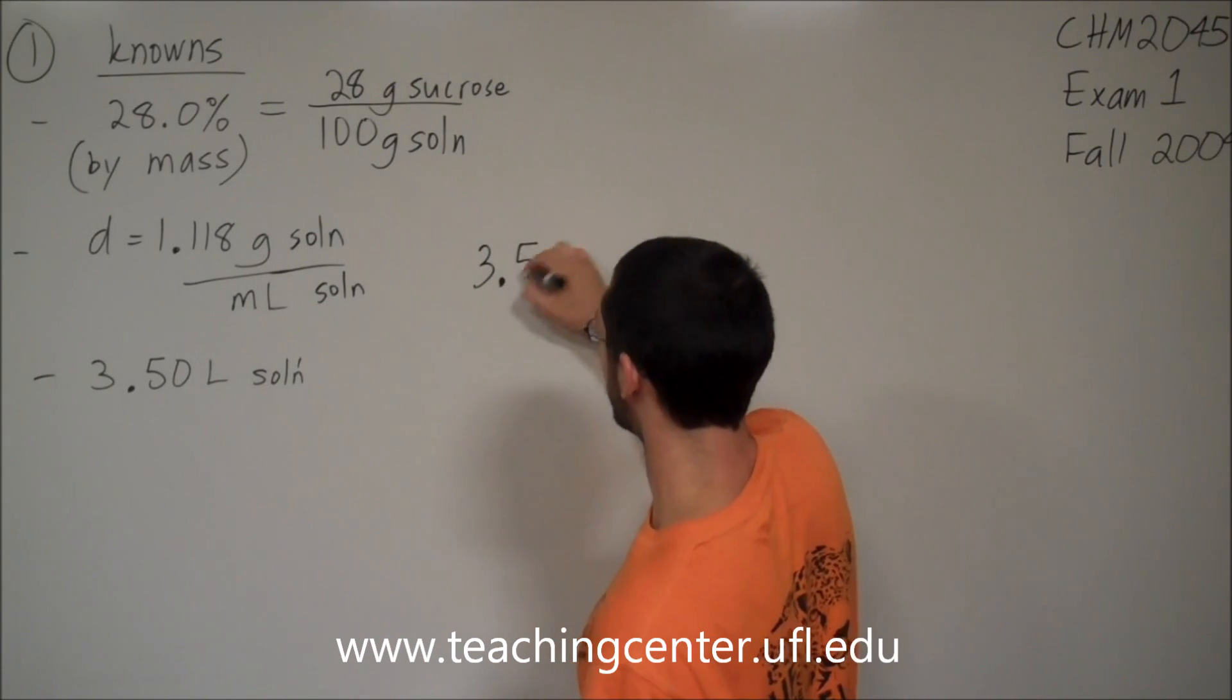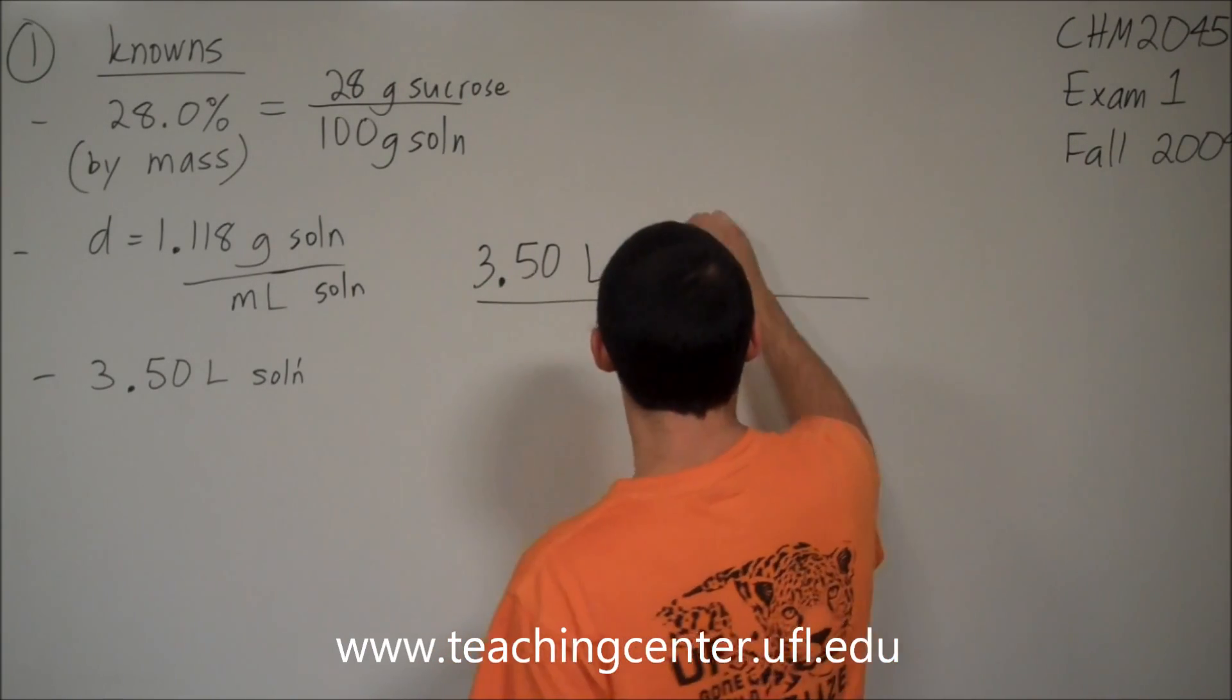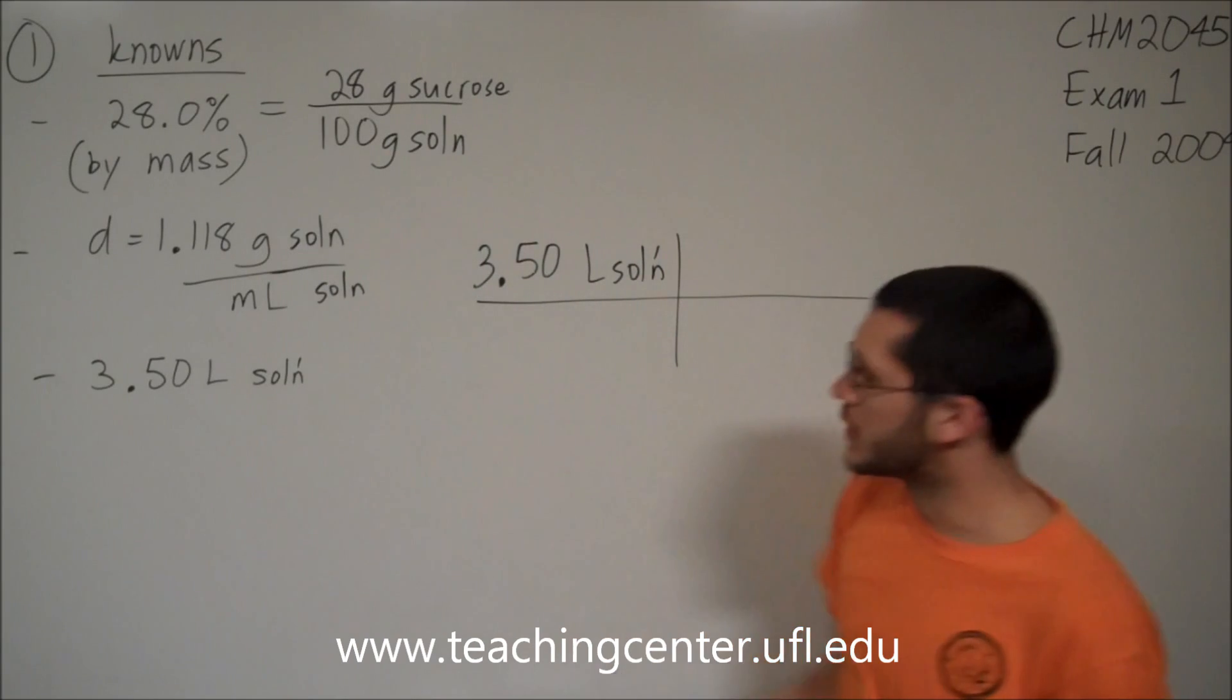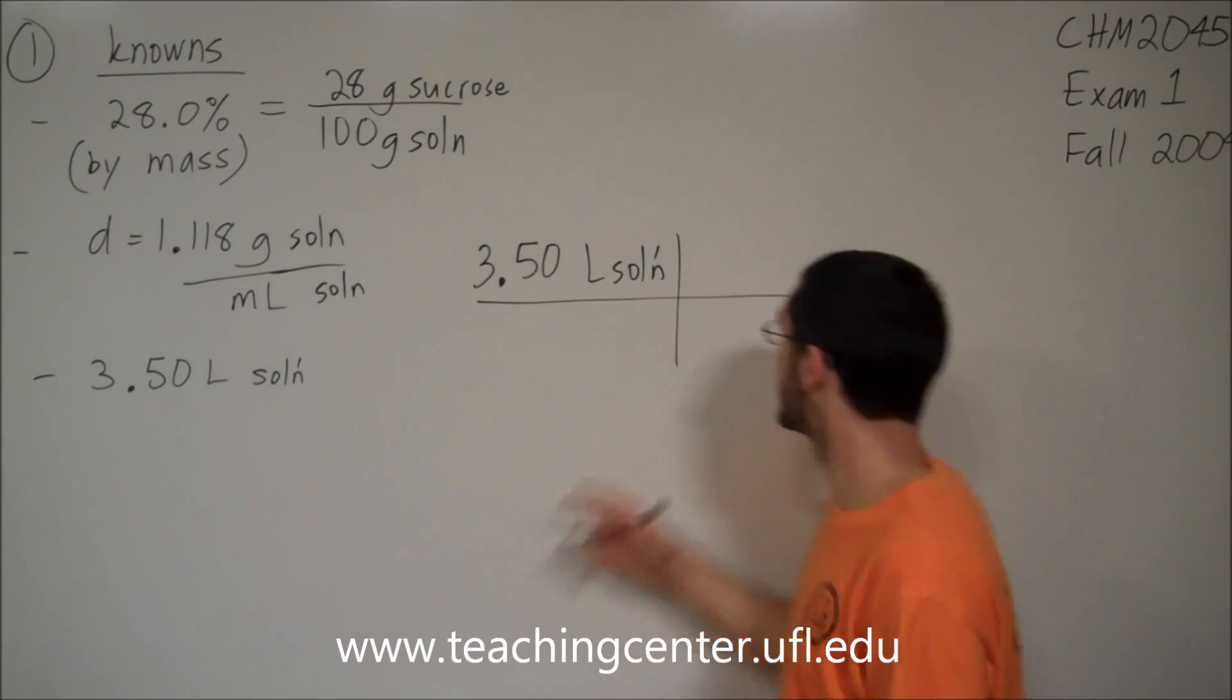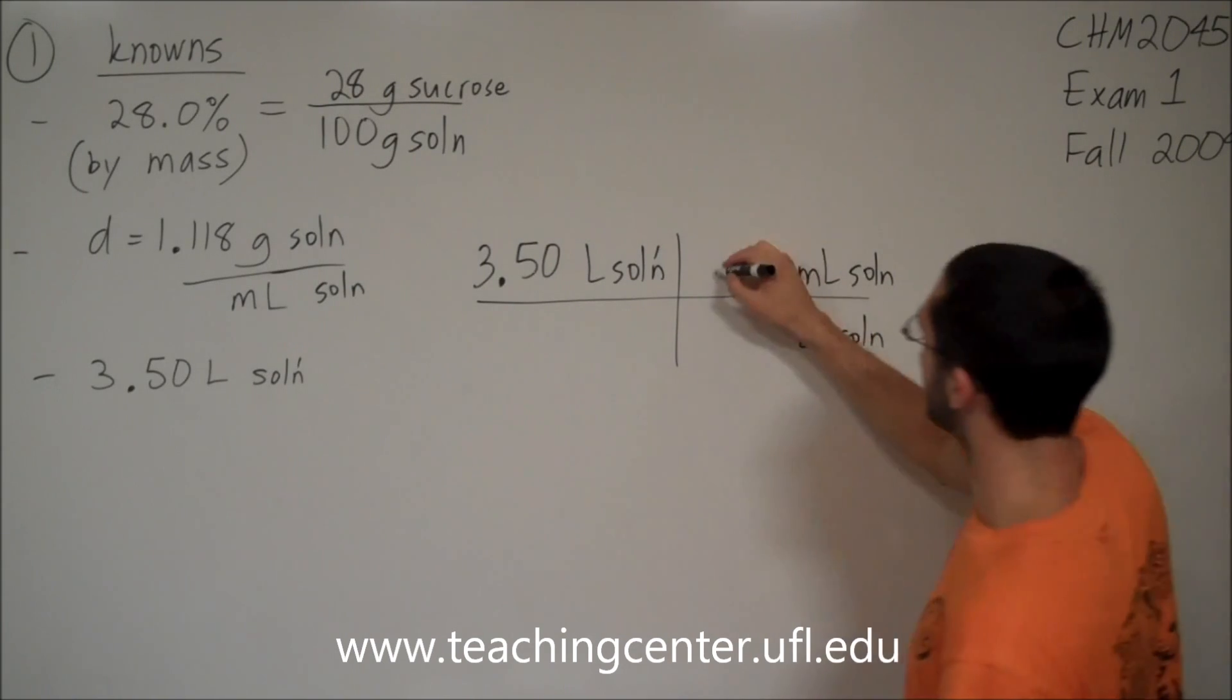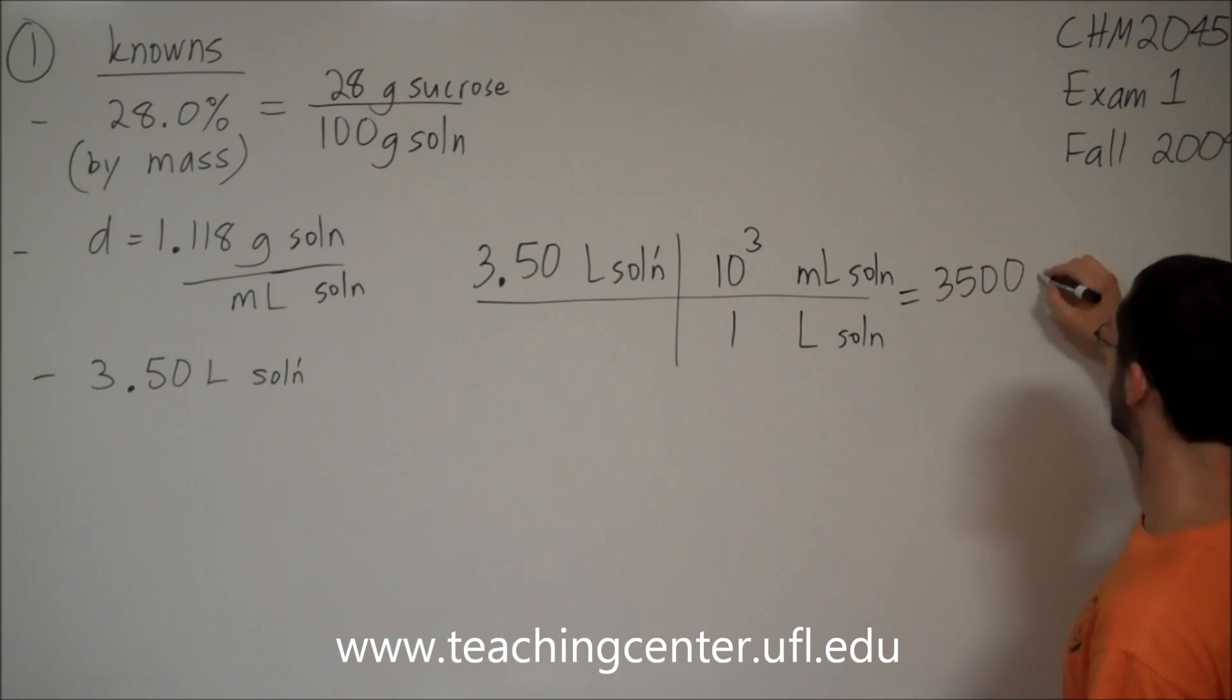So we're going to start with our 3.50 liters of solution and convert this number using our conversion factors to our answer. Follow your units and you can't go wrong. How do we follow our units? I'm at liters of solution, so I need to cancel out liters of solution somehow. I don't see liters of solution anywhere. But I see something close. I see that this is milliliters of solution. So I can just simply convert this number into mils of solution. So I need to cancel my liters of solution. How do I go from liters to milliliters? I know that there are 1,000. Remember that this is exponential notation. 1,000 mils per one liter. This gives me 3,500 mils solution.